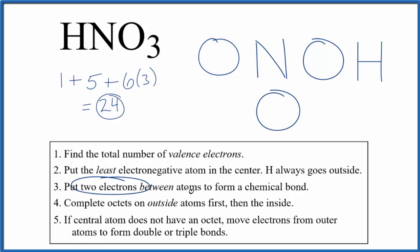Now we can put a pair of electrons between atoms to form the chemical bond. We've used eight valence electrons, we have 24.